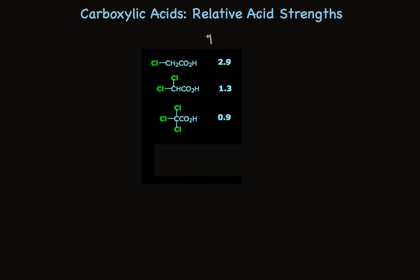Again, showing the pKa values. One chlorine, chloroacetic acid, has a pKa of 2.9. When we add two, it goes to 1.3. And when we have three chlorine groups, it goes to 0.9. This is a strong acid.